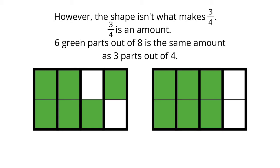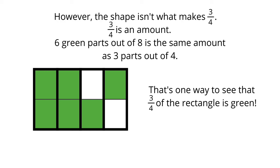However, three-fourths doesn't have to be a certain shape. Three-fourths is an amount. Six parts out of eight is the same amount as three parts out of four. That's one way to see that three-fourths of the rectangle is green.